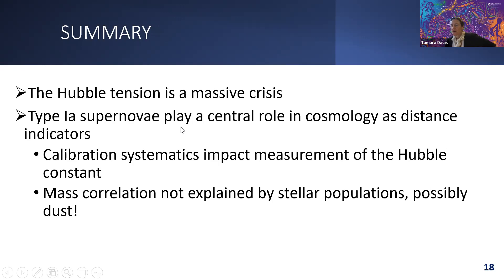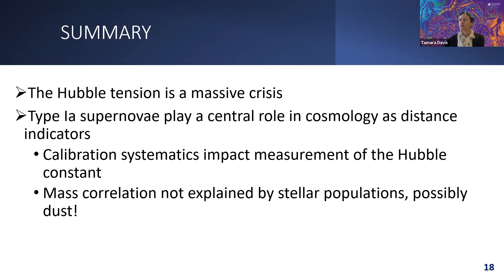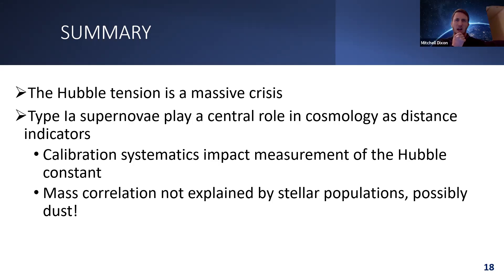Q&A: On the recent paper 'The Hubble Tension Bites the Dust' by Mörtsell et al., which shows that allowing for diverse extinguishing properties of extragalactic dust gives a lower Cepheid-based H0 of 66.9 — I haven't read it yet, but it does seem important. The tip of the red giant branch also gives a similar lower value. Going forward it does look like properly accounting for dust will lower the value and hopefully lessen the gap between early and late universe measurements.